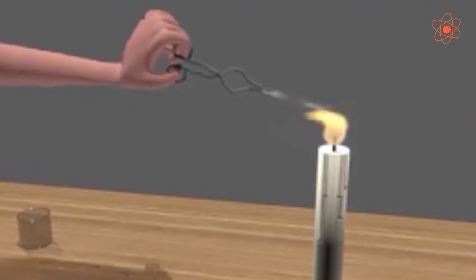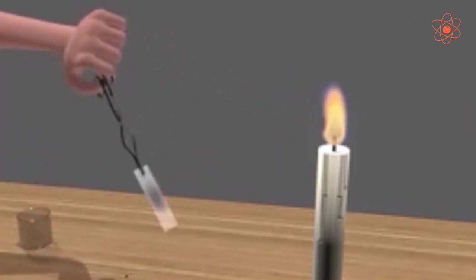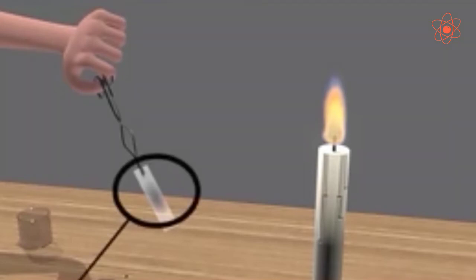You will observe a circular blackish ring on the glass slide. This shows that unburnt carbon particles are present in the middle zone of the candle flame.